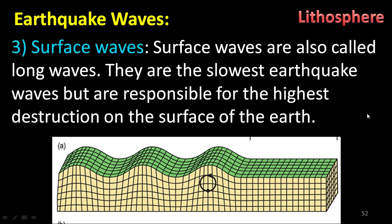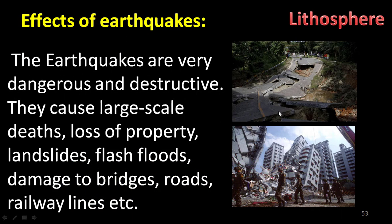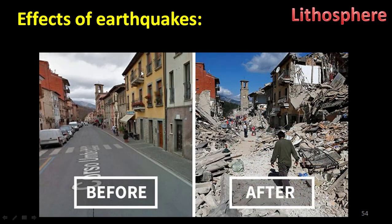These are the three important earthquake waves: primary waves, secondary waves, and surface waves. Now, the important effects of earthquakes: earthquakes are very dangerous and destructive. They cause large-scale deaths, loss of property, landslides, flash floods, and damage to bridges, roads, railway lines, etc. You can see pictures showing areas before and after an earthquake, illustrating the effects.